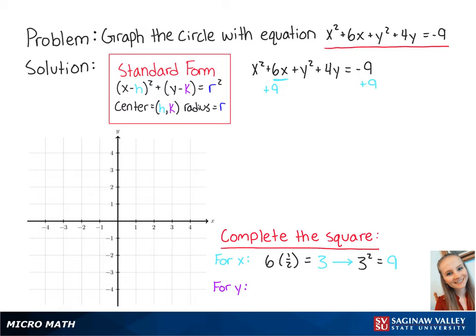To complete the square for y, we take the coefficient of y which is 4, we multiply it by 1 half which is equal to 2, then we take 2 and we square it which is equal to 4. So now we add 4 to both sides of the equation.